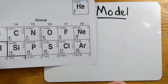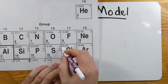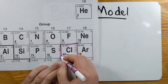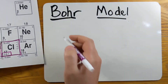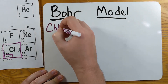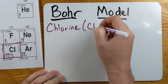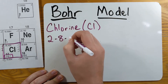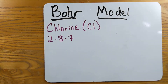Let's say we're looking at chlorine. All we need is the electron configuration for chlorine. So the element is chlorine, symbol Cl, and the electron configuration is 2-8-7. That's all I need from the periodic table.